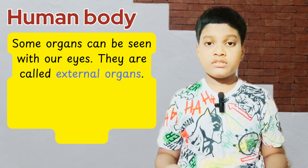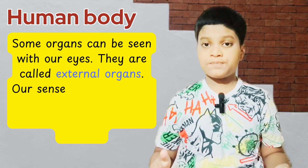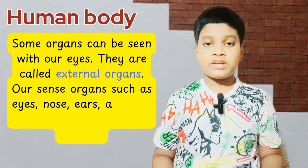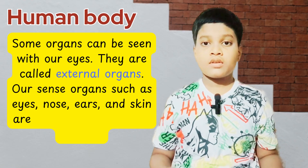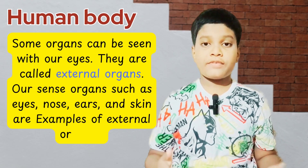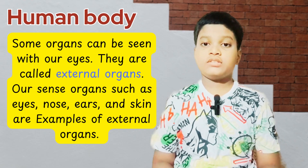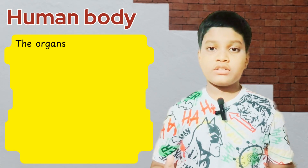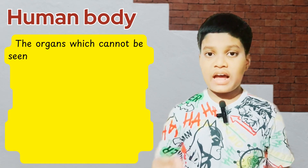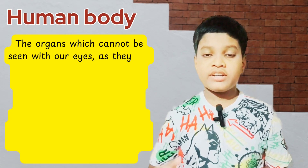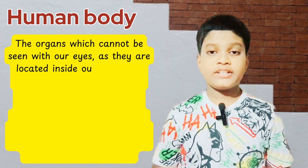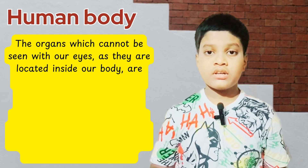Organs such as eyes, nose, ears and skin are examples of external organs. The organs which cannot be seen with our eyes, as they are located inside our body, are called internal organs.